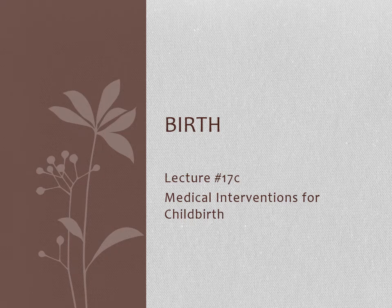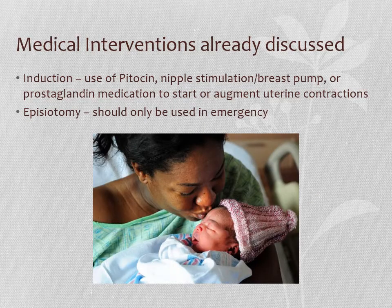Hi, this is Dr. Hall, lecture 17c. We're going to talk about two potential medical interventions for childbirth: anesthesia in the form of an epidural and a c-section. We've already talked about two potential interventions — inducing labor most commonly with Pitocin, synthetic oxytocin, and nipple stimulation, a breast pump, or misoprostol. We also talked about episiotomy, cutting the perineal skin, and how the risks generally outweigh the benefits — it shouldn't be done routinely, only if necessary.